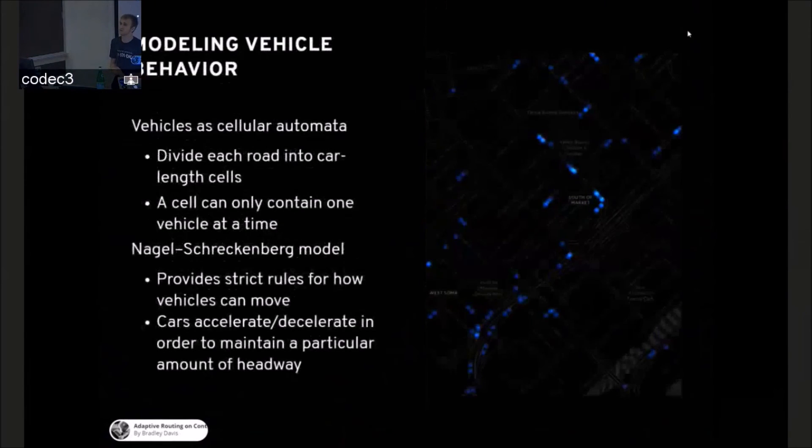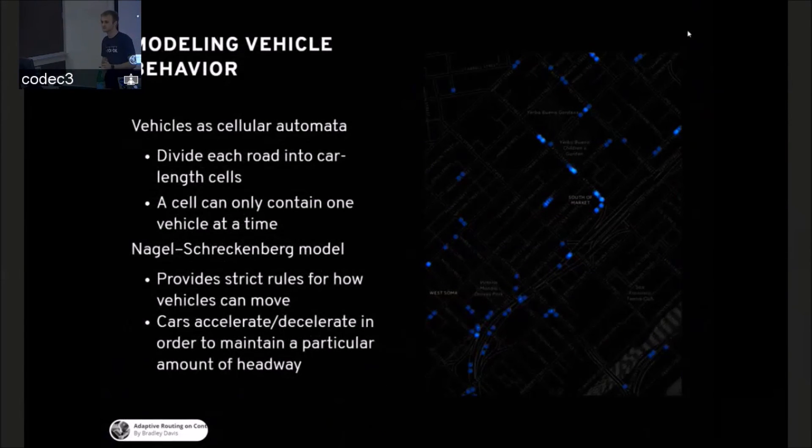We also have to model vehicle behavior, and that's a very complex field. But I chose a simple cellular automata model where we divide the road into car-length cells. And the general rule is a cell can only contain one car at a time. There's also an initial Schreckenberg model that provides very strict rules on how vehicles can move. And it's basically a car-following model where the car seeks to maintain a safe headway between the car in front of it, while approaching the target speed.